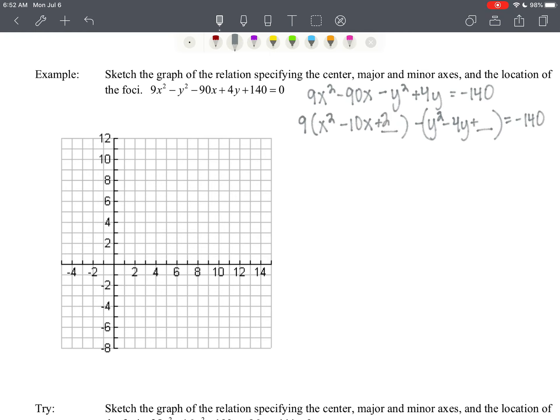Half of 10 is 5, 5 squared is 25, and we know now that 9 times 25 is 225, so we'll add that to the right-hand side. Half of 4 is 2, 2 squared is 4, negative 4, so we're going to subtract 4.